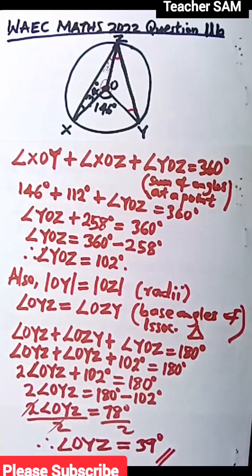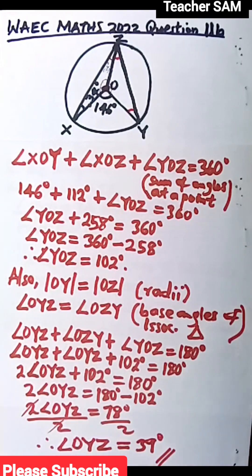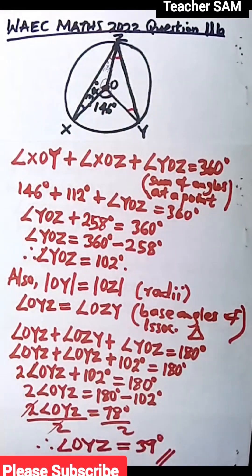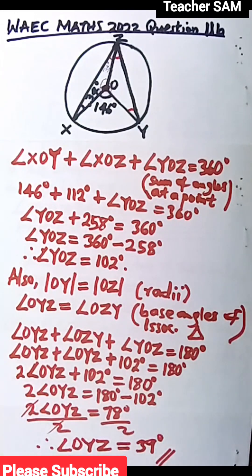So 39 degrees is the answer. I would advise you to go over this because we applied several laws while solving. There is no single specific approach in geometry — it depends on your understanding. This is a theory exam, so express yourself clearly so the examiner understands your working and gives you full marks. Ask questions if you have any problems, and we'll resolve them. We are here to help you be the best version of yourself.